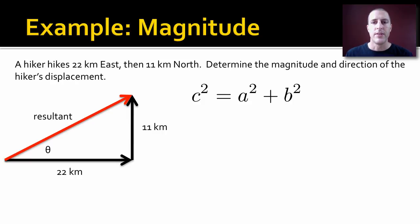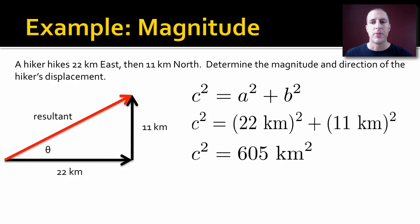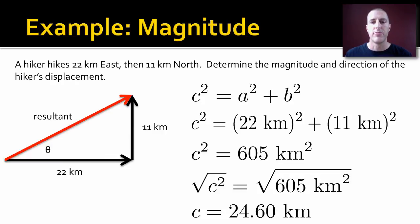To find the resultant, we're going to use the Pythagorean theorem. We plug in the numbers we have and solve for c. We end up getting 24.6 kilometers in this case. That's just the magnitude though. Now we need to find the direction.